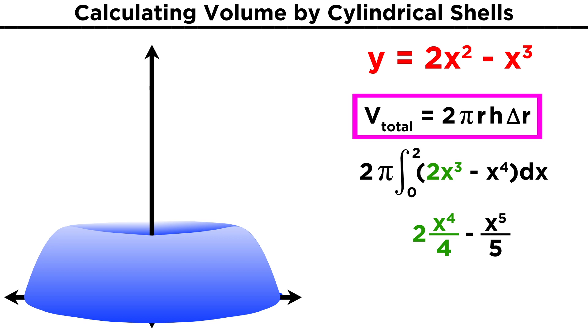We integrate to get two X to the fourth over four, or one half X to the fourth minus one fifth X to the fifth. We evaluate at two, and we get eight minus thirty-two fifths, or forty minus thirty-two over five. So we subtract and multiply by two pi to get sixteen-fifths pi.